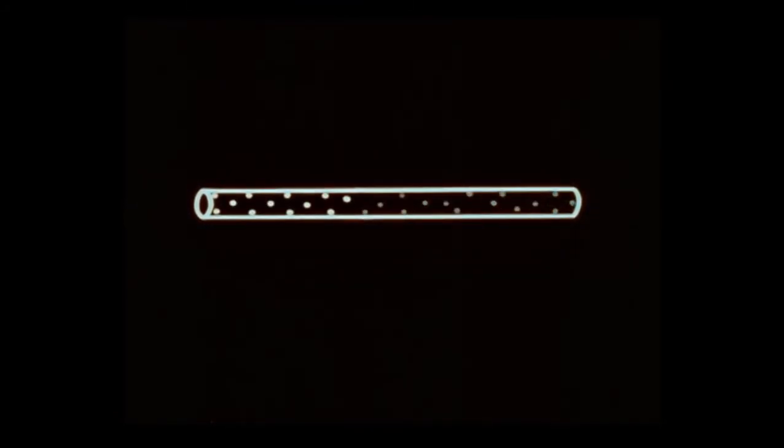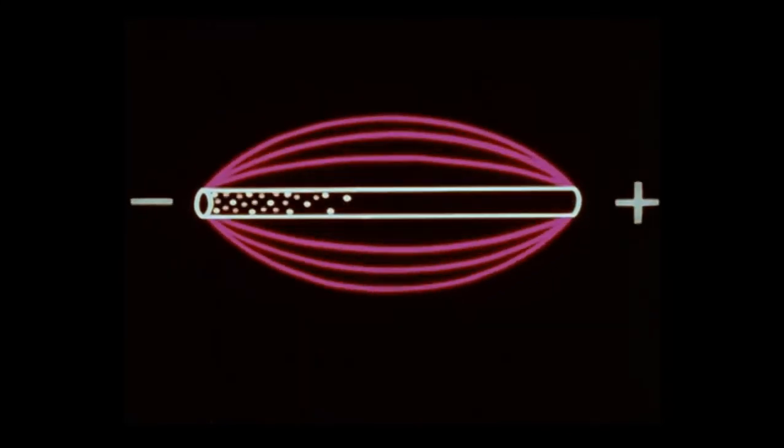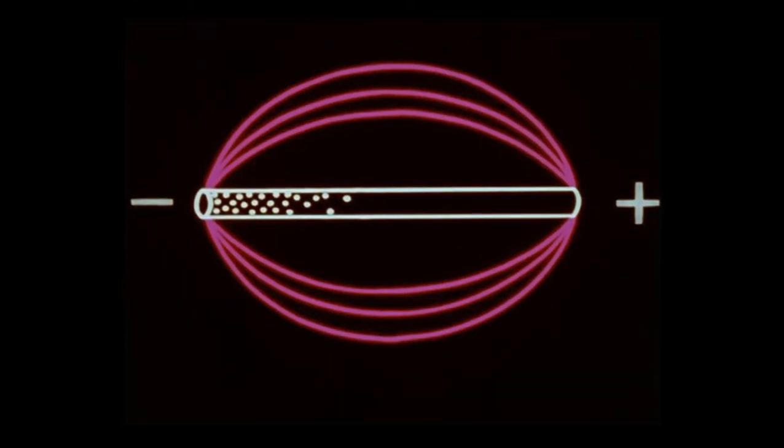This changing polarity produces an electric field in phase with it. When the voltage is of this polarity, the field is in this direction.